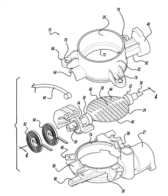A throttle is the mechanism by which fluid flow is managed by constriction or obstruction. An engine's power can be increased or decreased by the restriction of inlet gases by the use of a throttle, but usually decreased. The term throttle has come to refer, informally, to any mechanism by which the power or speed of an engine is regulated, such as a car's accelerator pedal.